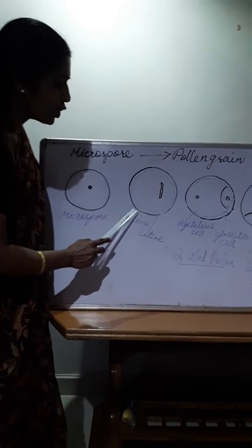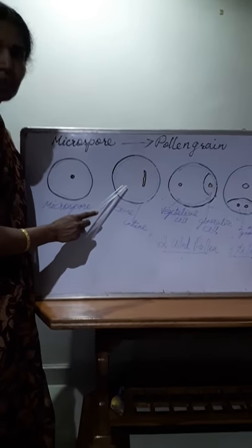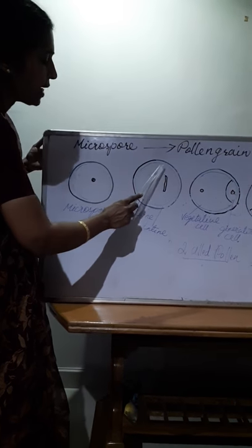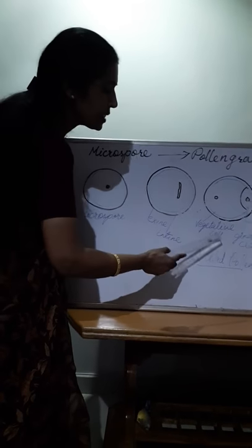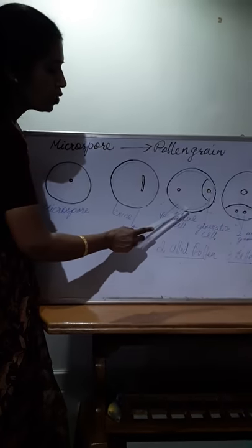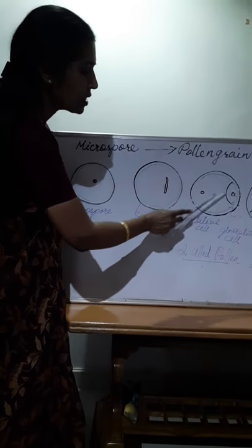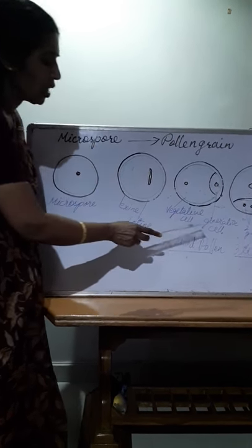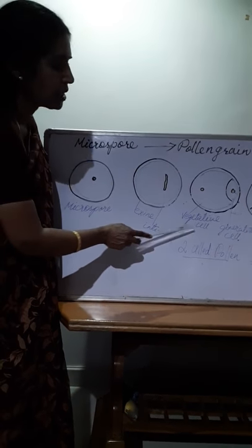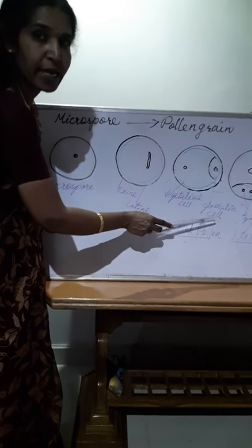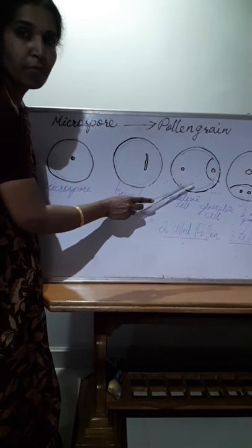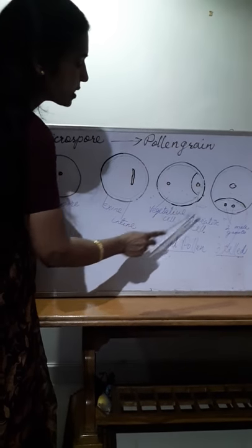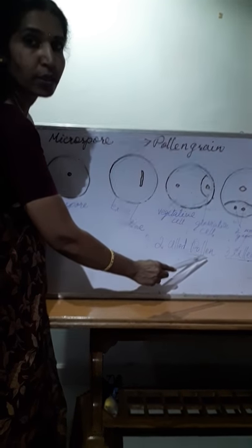When the microspore grows into a pollen grain, it develops a vacuole and the nucleus starts dividing, followed by division of the cytoplasm. Two cells are formed: the large one is called the vegetative cell, and the smaller one is called the generative cell. The vegetative cell has an irregularly shaped nucleus, dense cytoplasm, and nutrients, which provide nutrients to the growing generative cell. This stage is known as the two-celled pollen grain.